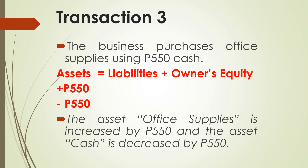Transaction number three: the business purchases office supplies using $550,000 cash. The asset office supplies is increased by $550,000, while the asset cash is decreased by $550,000. There is no effect on liabilities or owner's equity. The asset side nets to zero — the increase and decrease offset each other, so the accounting equation remains balanced.